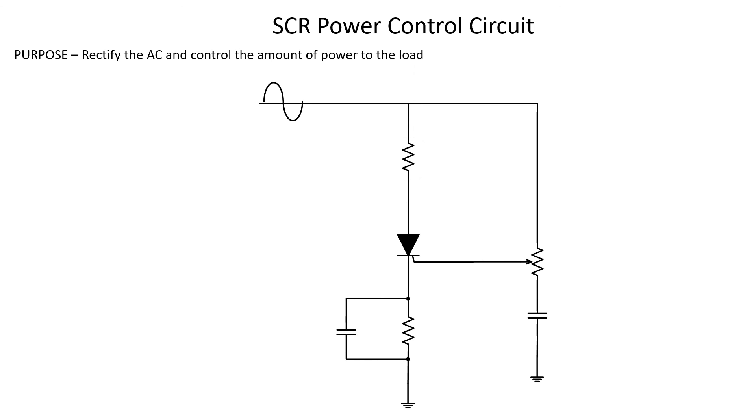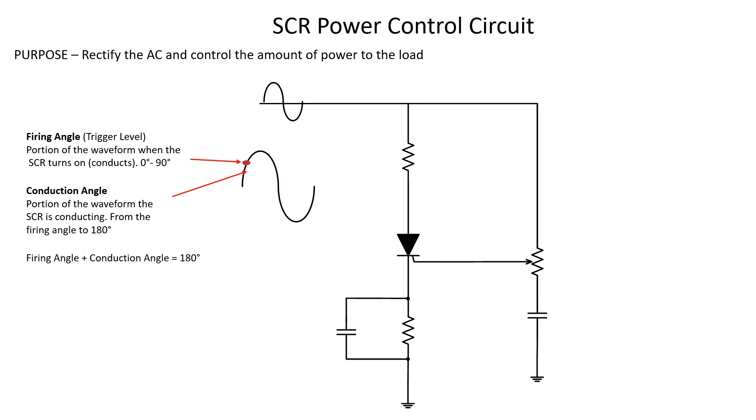There are two important components we discussed today. The first one was the firing angle. This is the portion of the waveform that causes the SCR to turn on, somewhere between 0 and 90 degrees. The other component was the conduction angle, which is the portion of the waveform that the SCR is conducting. They both add up to 180 degrees, so if we had a firing angle of 45 degrees, then the conduction angle would be 135 degrees.